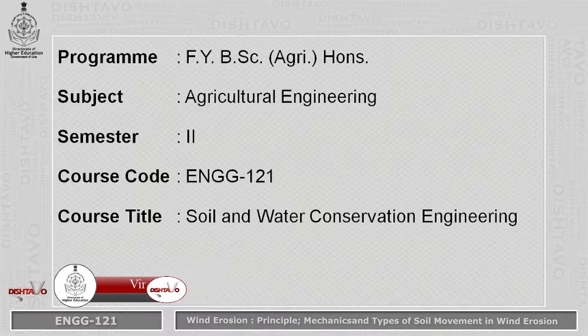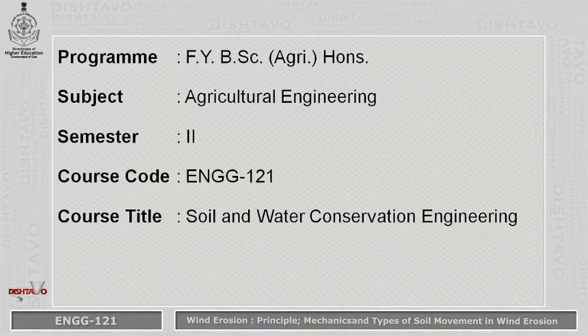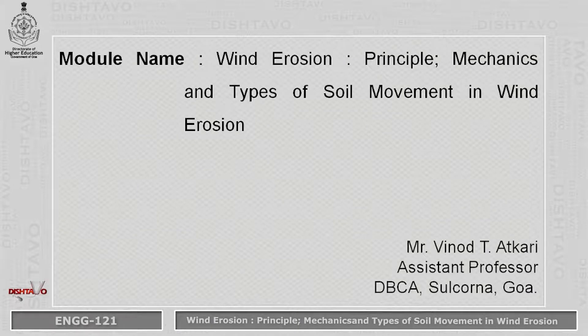Today I will present Module No. 3 on Soil and Water Conservation Engineering, having course code Engineering 121 for the 2nd semester of 1st year B.S. Agriculture Honours. The name of the module is Wind Erosion — that is, Principles, Mechanics and Types of Soil Movement in Wind Erosion.